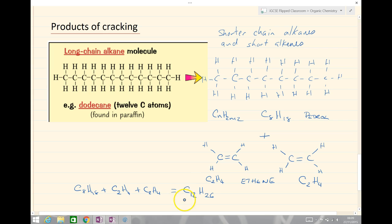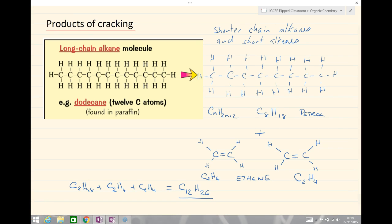And you'll notice there that this total formula is exactly the same as the dodecane to start with. So just to remind yourself, the products of cracking: shorter chain alkanes for things like fuel, and short chain alkenes - ethene for making polymers or plastics.